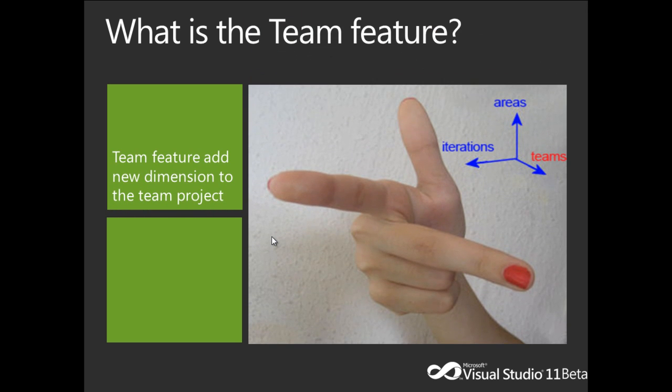The Team feature is a new feature introduced in TFS 11 that adds a new dimension to the Team project. Before Team, we only had two dimensions, which are iteration and area. But after the Team feature, now we have three dimensions: iteration, area, and team. So now, the Team project can have many iterations, many areas, and many teams as well.